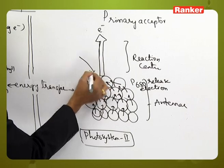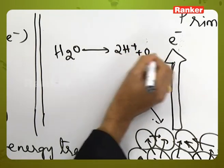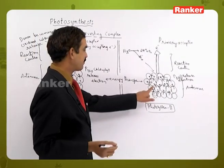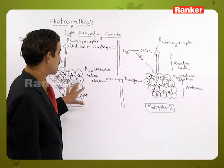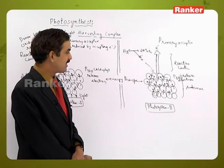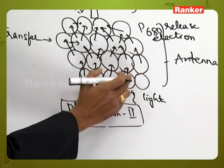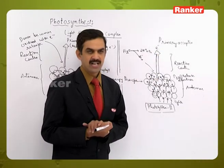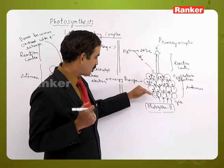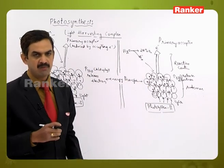The loss of electrons in PS2 is compensated by the photolysis of water: the water molecule splits to form oxygen, protons, and electrons, which are accepted by P680. This relationship exists between electron transfer in PS1 and PS2 — both made up of antenna regions and reaction centers. By absorbing light, P680 is excited and releases an electron, getting oxidized, while the primary acceptor gets reduced. The loss of electrons in the P680 chlorophyll is compensated by the photolysis of water with the help of the oxygen evolving complex.